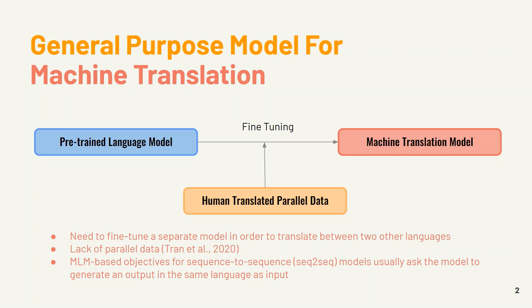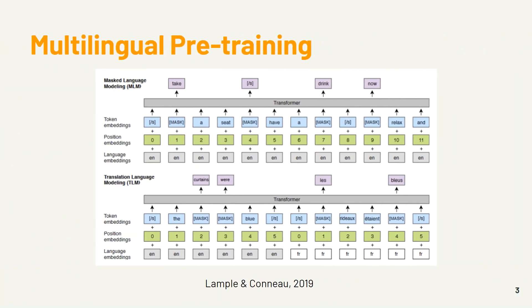Also, in MLM-based objectives for sequence-to-sequence models, we should note that they usually ask the model to generate an output in the same language as the input. To solve the issue with MLM-based objectives and the need to fine-tune a separate model for translating between two other languages, a new approach called multilingual pre-training is introduced. What we introduce here is LAMPE's approach from 2019.